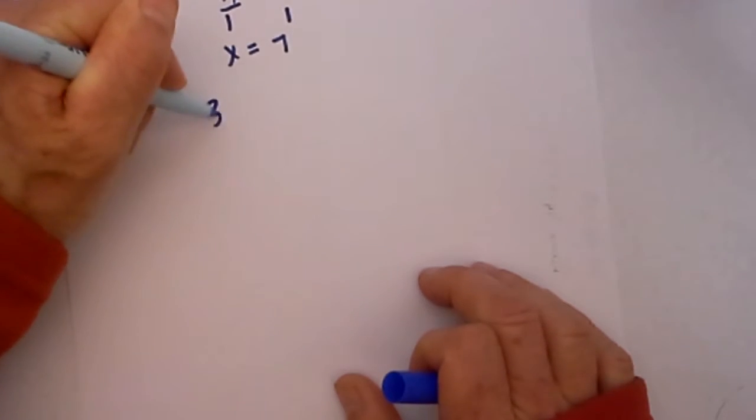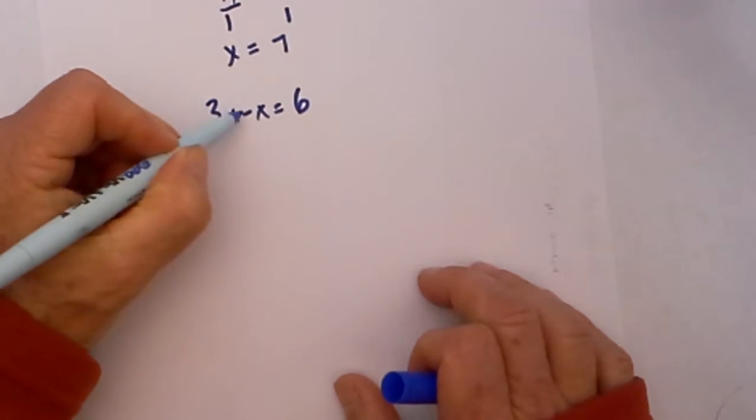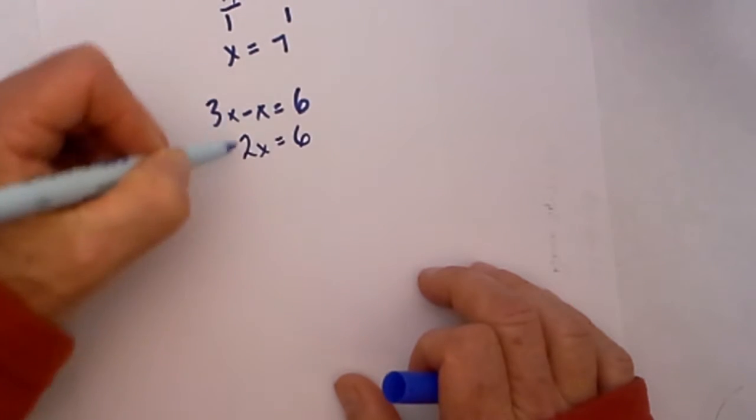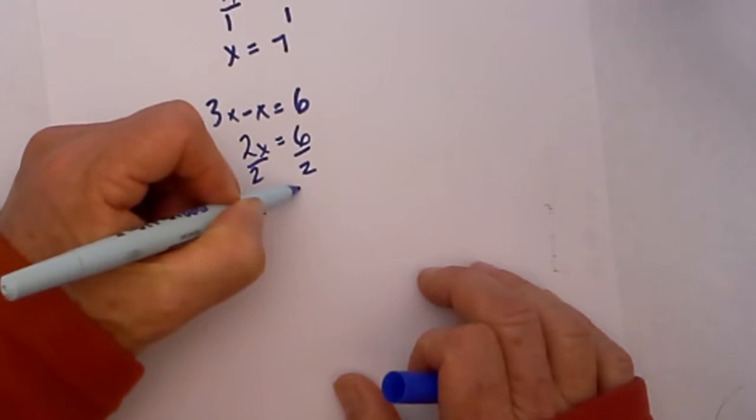Say we have 3x minus x equals 6, then 3x minus x equals 2x equals 6. Divide both sides by 2 and x is equal to 3.